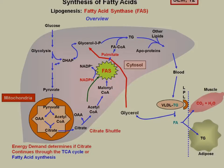At that point, the malonyl-CoA goes into fatty acid synthesis, producing palmitate. Palmitate is attached to a CoA to form a fatty acyl-CoA that's incorporated into a triglyceride with glycerol-3-phosphate. Glycerol-3-phosphate comes from glycolysis, where dihydroxyacetone phosphate is first made and then converted into glycerol-3-phosphate.